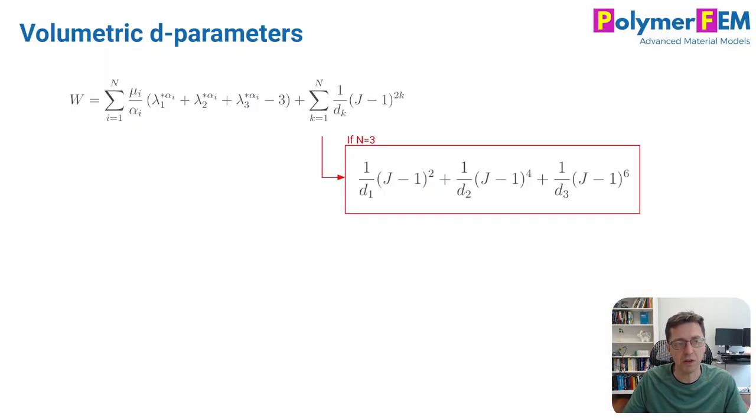The second difference and point here is that this material model has two kinds of material parameters. We have the mu and alpha and then we have the d. So d is volumetric, mu and alpha has to do with the rest of the response, the deviatoric response.